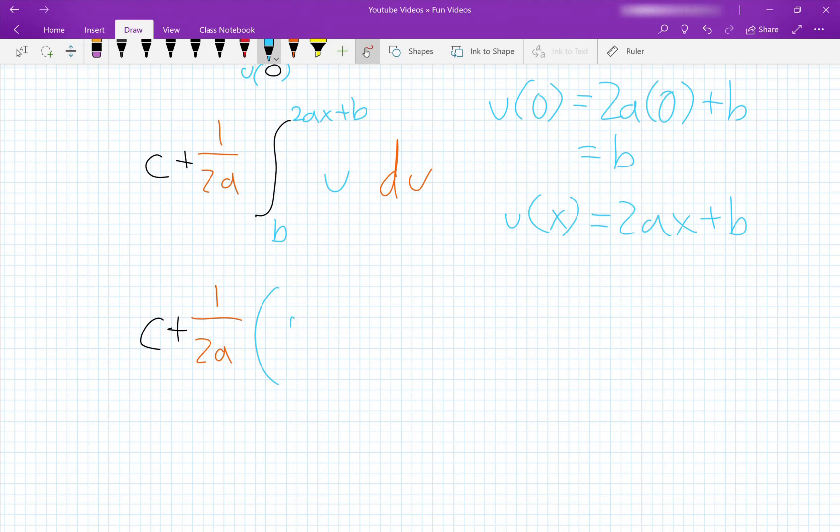And then we have u squared over 2 from b to 2ax plus b.